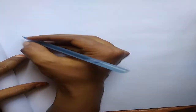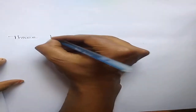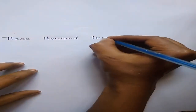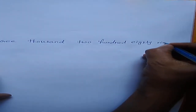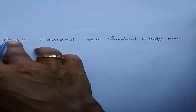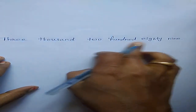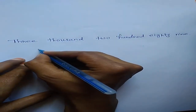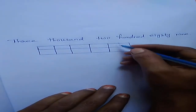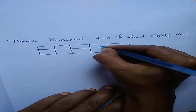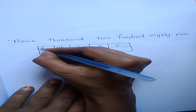Next we learn about how to write numerals from number names. Now see the note, children. I write one number name. The number name is: three thousand two hundred and eighty-nine. Now draw one box. In this box we write the place values: ones, tens, hundreds, thousands, ten-thousands.